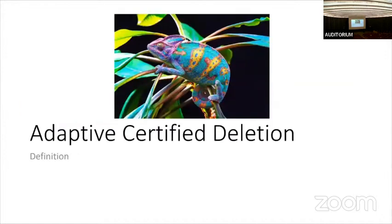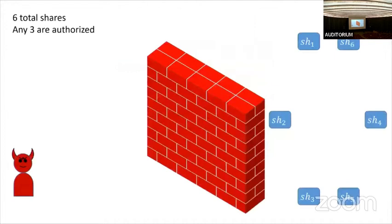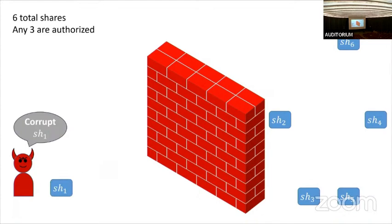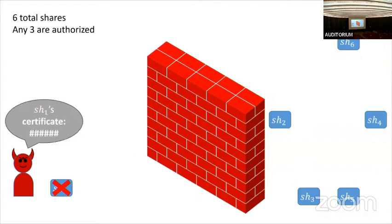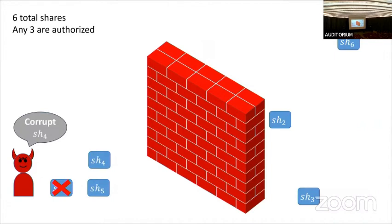Now let's move on to adaptive certified deletion — the slower adversary. We start with the same split as before, except now the adversary does not get to see any of the shares yet. One at a time, the adversary can either corrupt a share of its choice, or delete a share by producing a valid certificate. If the certificate is invalid, the experiment immediately aborts. It can keep doing this as long as it likes, with the only constraint being that the set of shares which are corrupted but not yet deleted cannot be authorized.